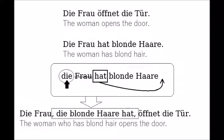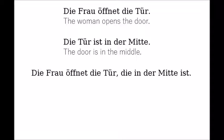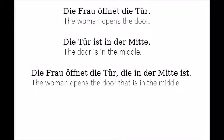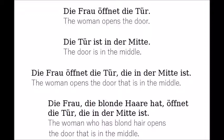How about we describe the door? Let's say we want to give this information about the door: 'Die Tür ist in der Mitte.' 'Die Frau öffnet die Tür, die in der Mitte ist.' You can have as many relative clauses as you have nouns. For example: 'Die Frau, die blonde Haare hat, öffnet die Tür, die in der Mitte ist.' — 'The woman, who has blonde hair, opens the door that is in the middle.'